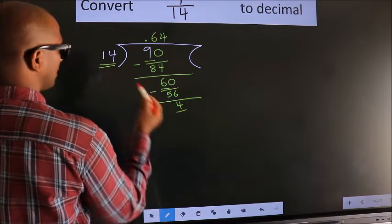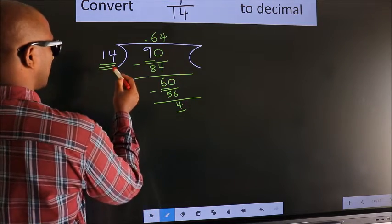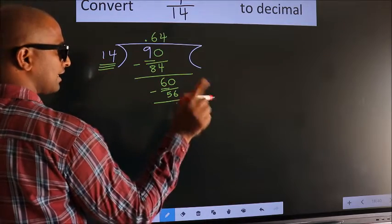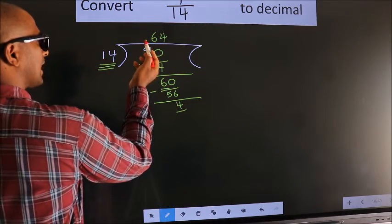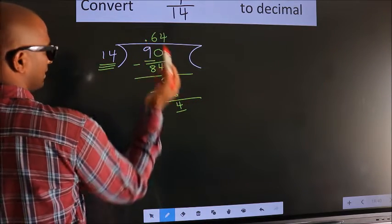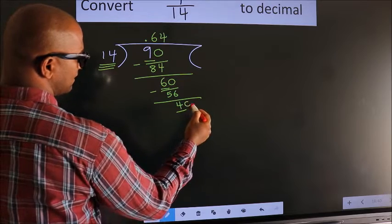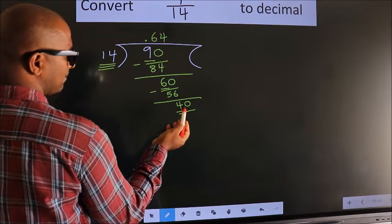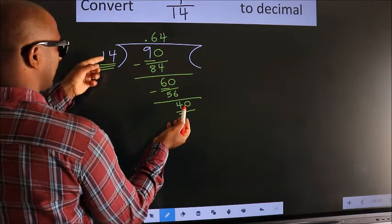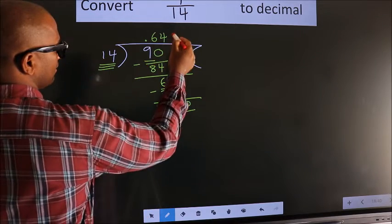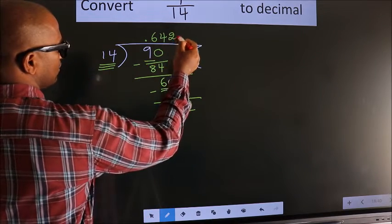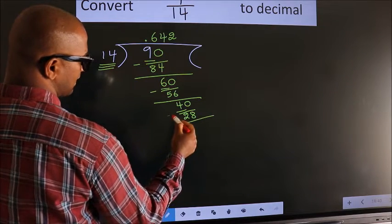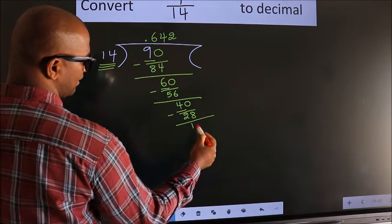Here we have 4 and here 14. 4 is smaller than 14, and we already have the decimal, so we can directly take 0. So we have 40. A number close to 40 in the 14 table is 14 × 2 = 28. Now we subtract. We get 12.